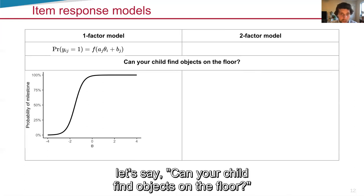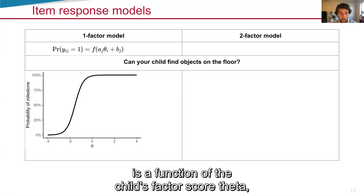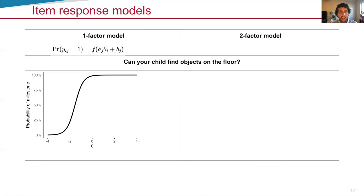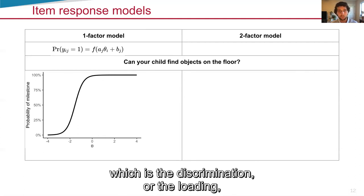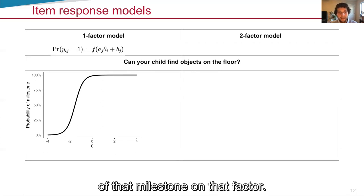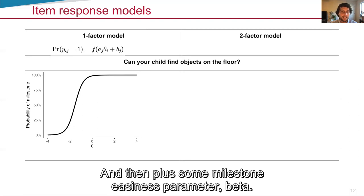The simplest that we fit is a one-factor model where the probability of the child having reached the milestone, let's say, can your child find objects on the floor, is a function of the child's factor score theta multiplied by alpha, which is the discrimination or the loading of that milestone on that factor, plus some milestone easiness parameter beta.